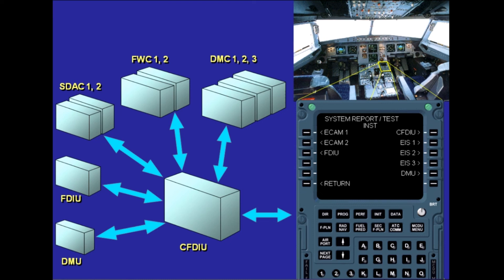EIS-1 gives access to DMC-1, PFD-1, ND-1, and EWD. EIS-2 gives access to DMC-2, PFD-2, ND-2, and SD. EIS-3 gives access to DMC-3.